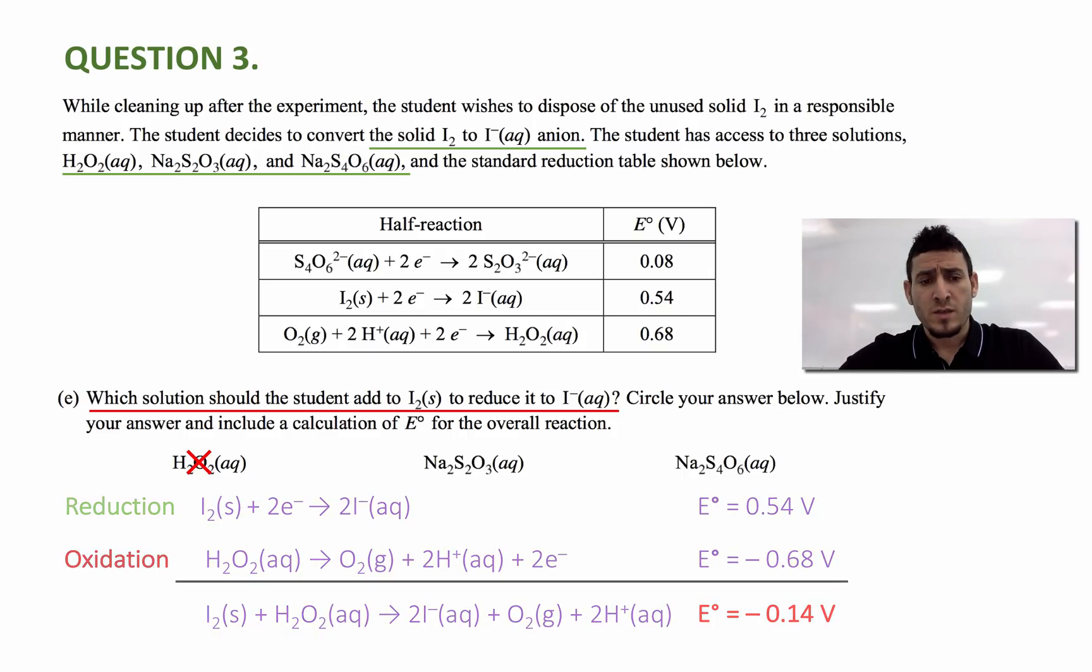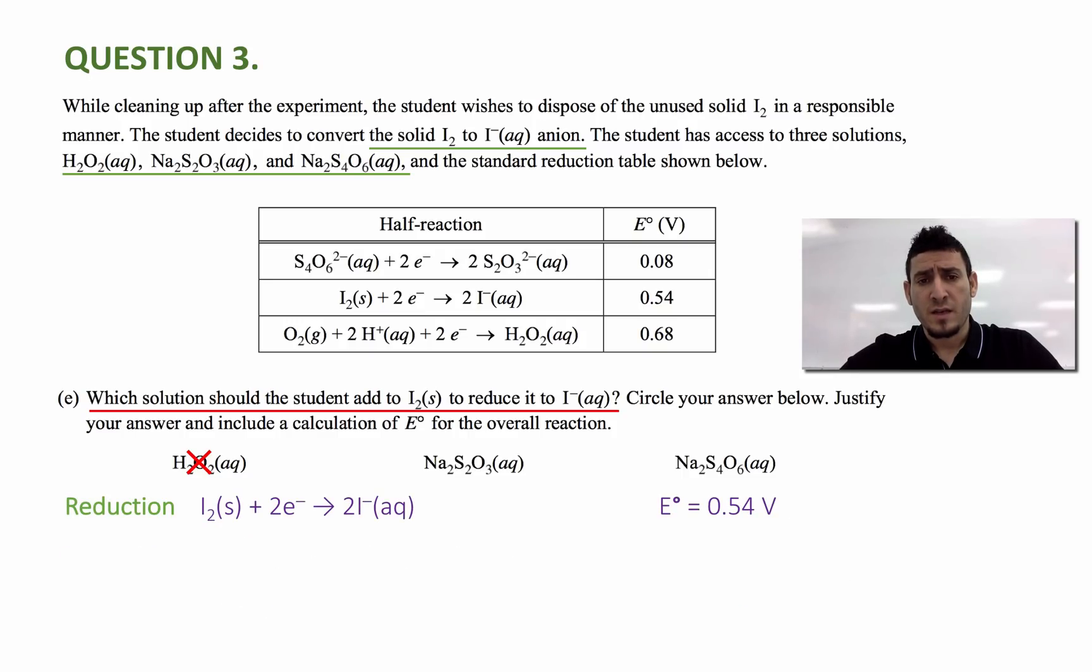Let's try another one. I'll take the reduction half equation of iodine again and mix it with the first equation, which is S4O6 2 minus plus two electrons gives two S2O3 2 minus. Since I need the S4O6 to be in the reactant side, so I cannot flip this equation. But these two half equations are reduction half equations. And therefore, they don't sum up. So Na2S4O6 cannot be used to dissolve I2.